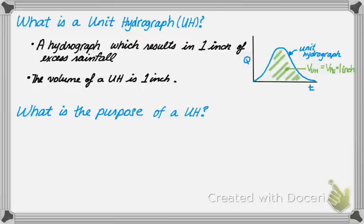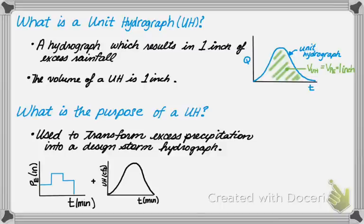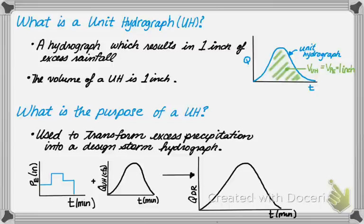So what is the purpose of a unit hydrograph? It is a transform function which converts excess precipitation into direct runoff. A unit hydrograph allows the development of a design storm hydrograph. If you are given a hydrograph which shows excess precipitation as a function of time, and you combine it with a unit hydrograph, the output would be a direct runoff hydrograph.